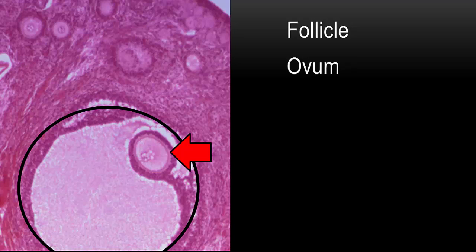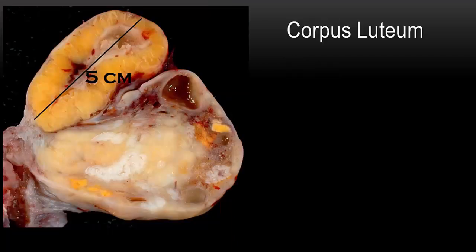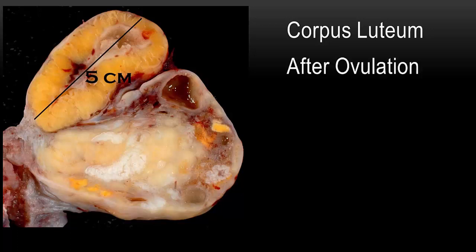This is how the ovary would appear before ovulation. Now at ovulation, the egg is released and the follicle becomes a different structure — it becomes the corpus luteum. As you can see here, it's quite a large structure. This ovary has a corpus luteum that's about five centimeters, or about two inches, long. This is how the ovary would appear after ovulation.